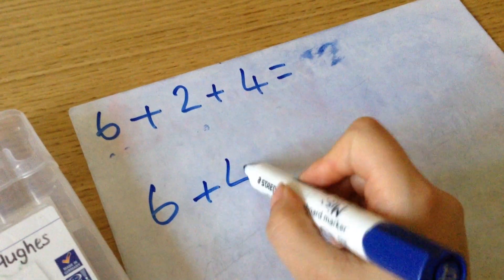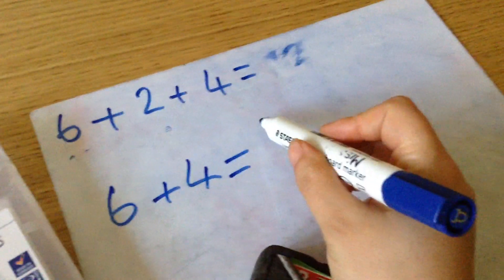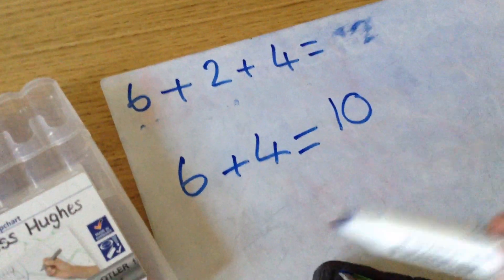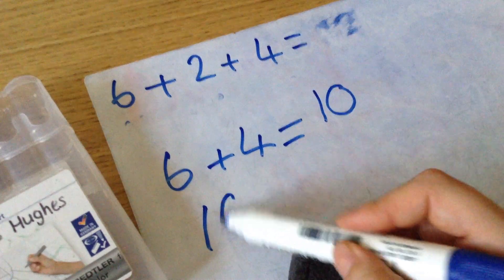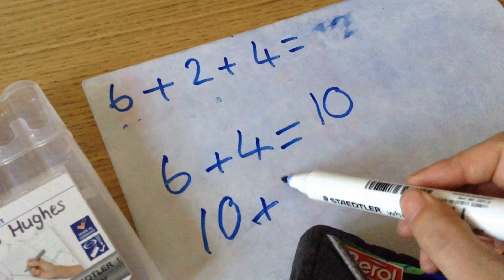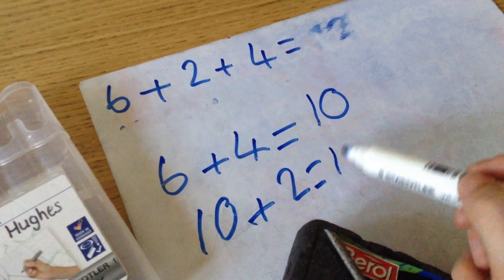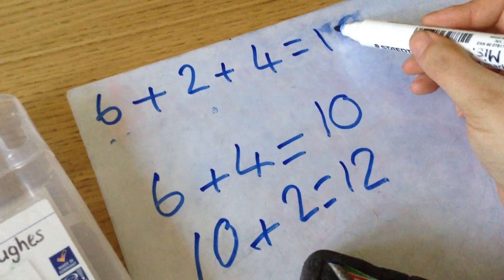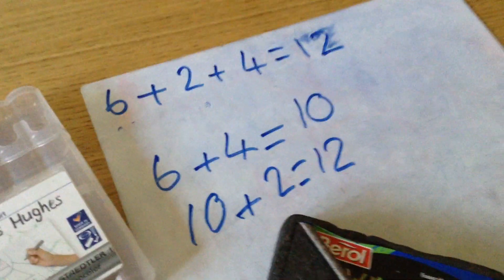So six add four equals ten. I'm then left with two. So I know that ten add two equals twelve. Our answer is the same. Whichever way you want to do it, that is fine.